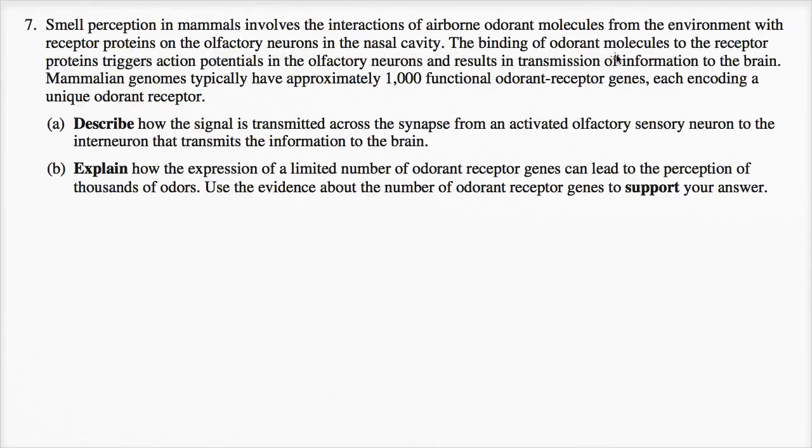The binding of odorant molecules to the receptor proteins triggers action potentials in the olfactory neurons and results in transmission of information to the brain. Mammalian genomes typically have approximately 1,000 functional odorant receptor genes, each encoding a unique odorant receptor.